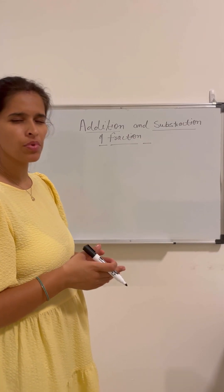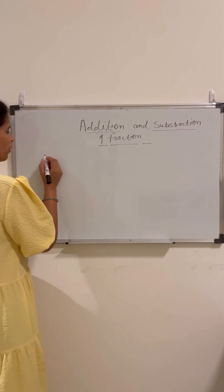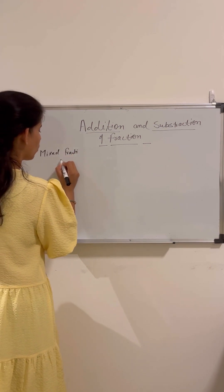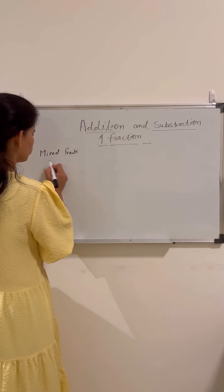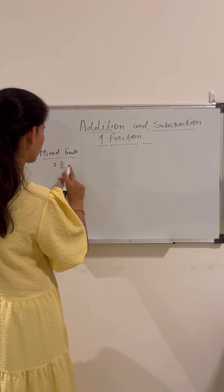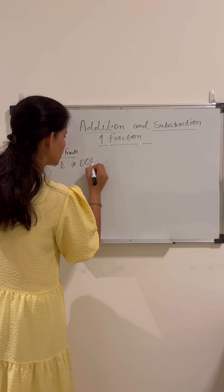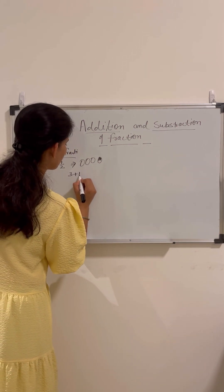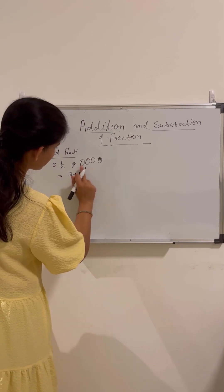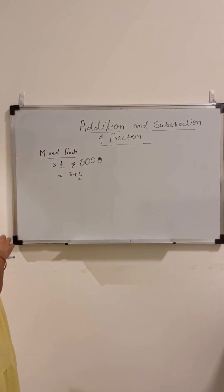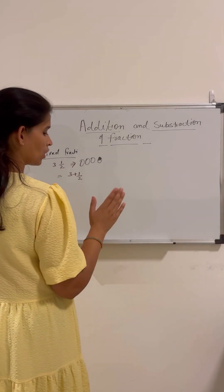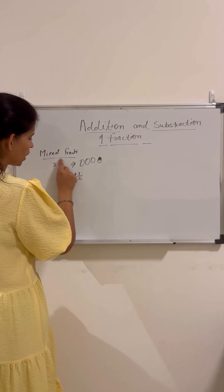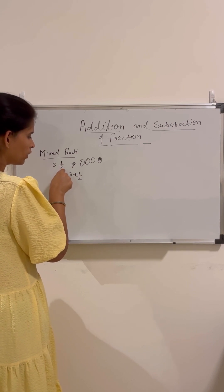Now let us learn how to solve addition and subtraction in mixed fractions. A mixed fraction means a whole number and a proper fraction together. For example, 3 and 1 by 2 means I have 3 whole pieces and 1 half piece, which we can write as 3 plus 1 by 2. Now we will learn how to solve addition and subtraction for mixed fractions.